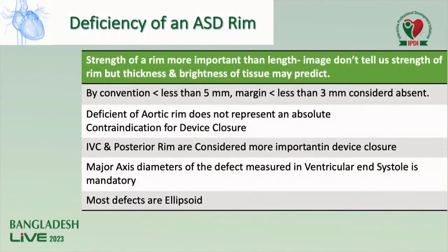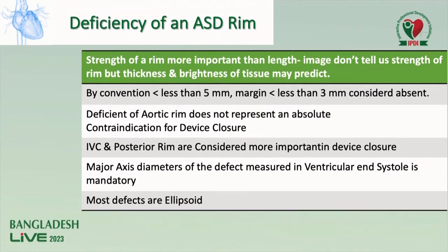When we define deficiency of a rim, by convention, if it is less than 5 mm, it is called deficiency of rim. If the margin is less than 3 mm, it is considered absent. Strength of a rim is more important than length, but imaging doesn't tell us the strength. Thickness and brightness of tissue may predict rim strength. Deficient rims don't represent an absolute contraindication for device closure. IVC and posterior rims are more important.